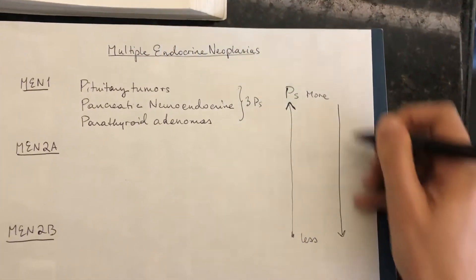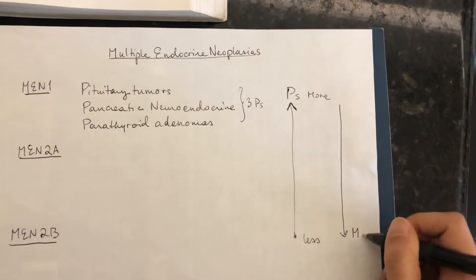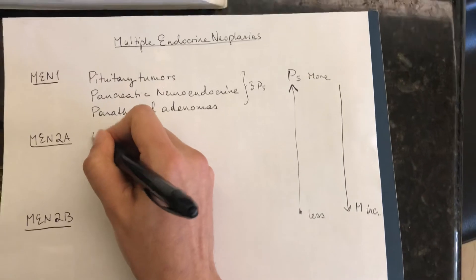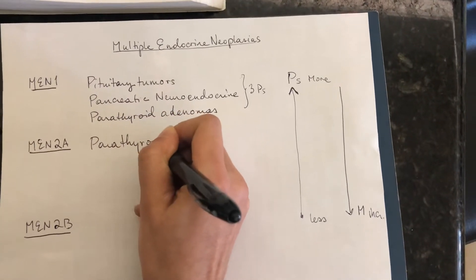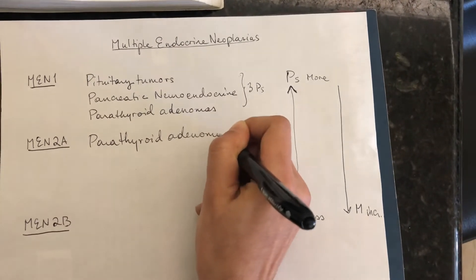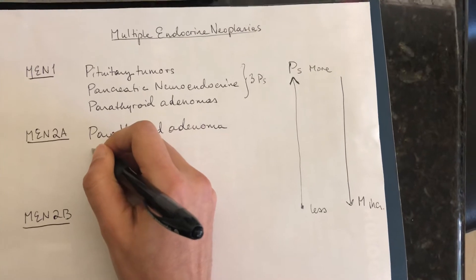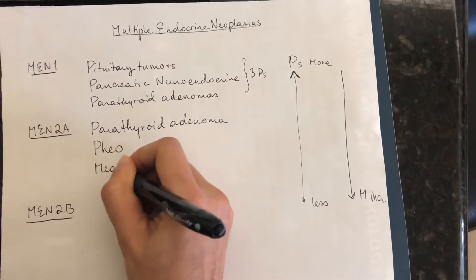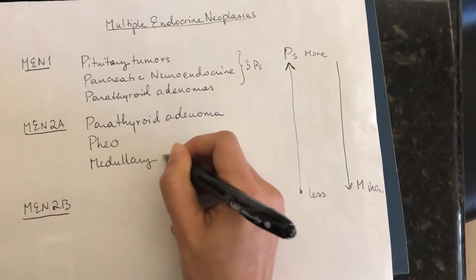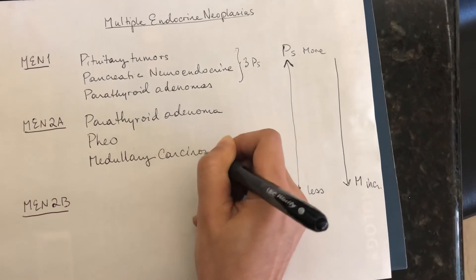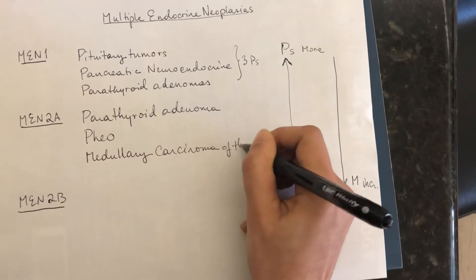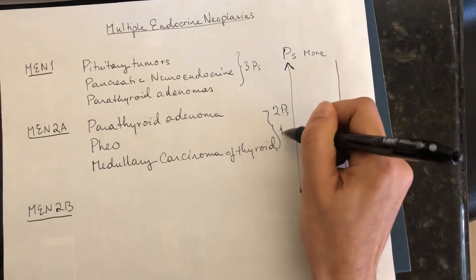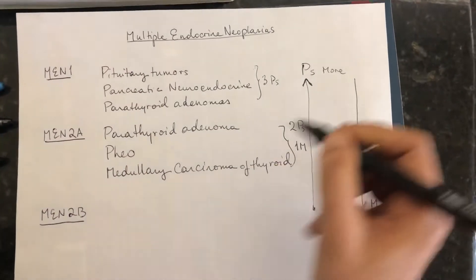As you go down, your M's increase. So for MEN 2A, you have one less P and one more M. You're going to have parathyroid, pheochromocytoma, and medullary carcinoma of the thyroid — so two P's and one M.